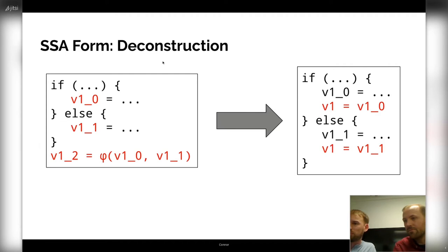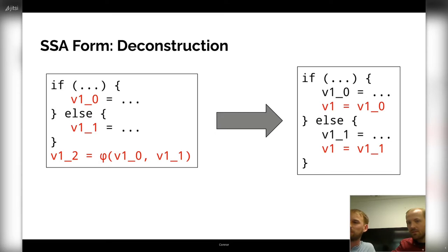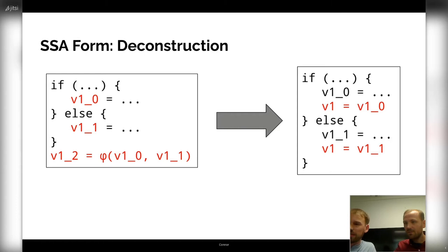Before a program can run on any hardware, the phi nodes have to be removed again, as they cannot be executed on the hardware. So SSA deconstruction has to be performed, also known as SSA elimination, and is traditionally performed before register allocation by inserting copies on the control flow edges. These copies can sometimes be removed by the so-called coalescing pass.